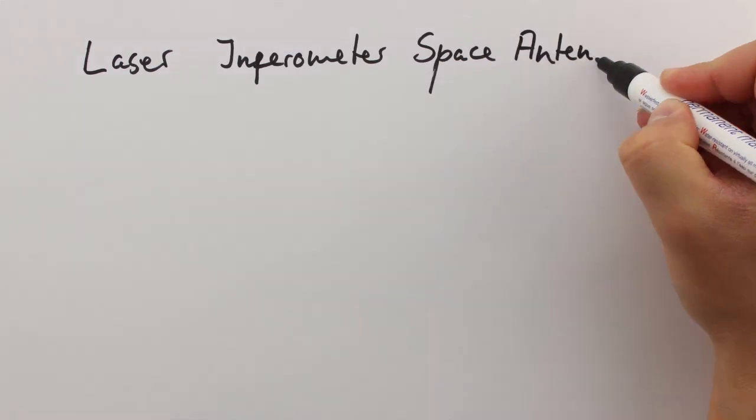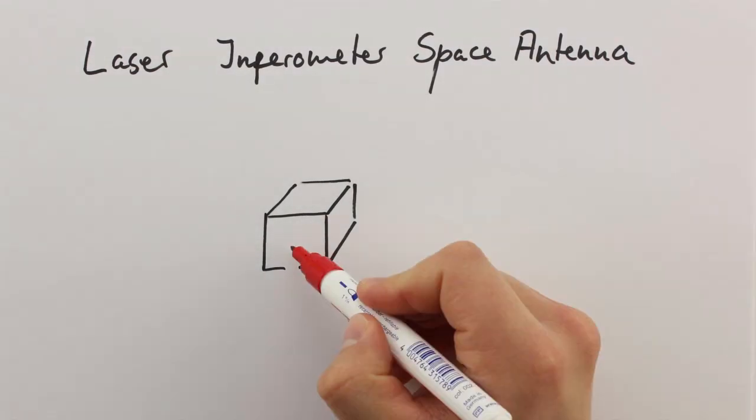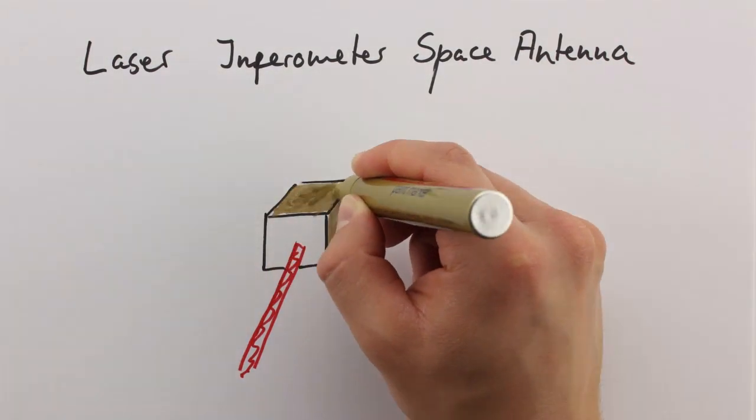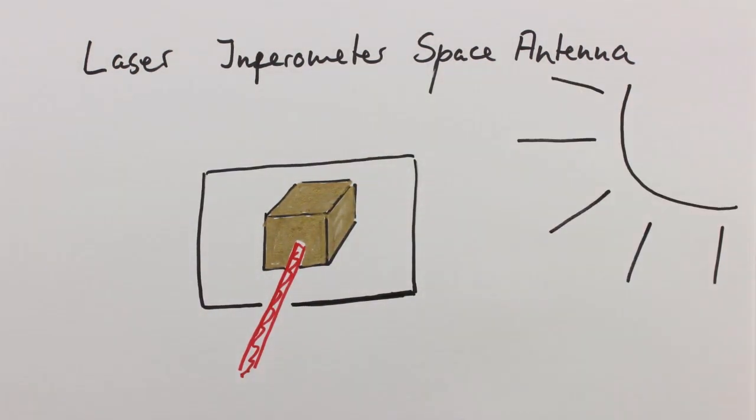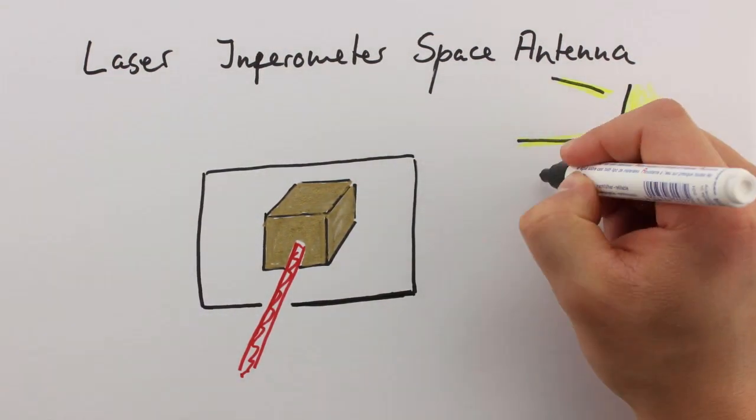This is the idea behind the planned laser interferometer space antenna. Instead of mirrors, the detector has some highly reflective cubic test masses, which are free-floating inside a satellite. This protects them from other forces, like the solar wind.